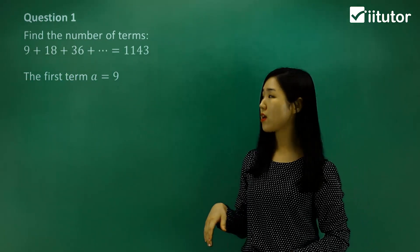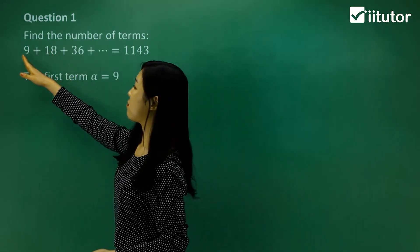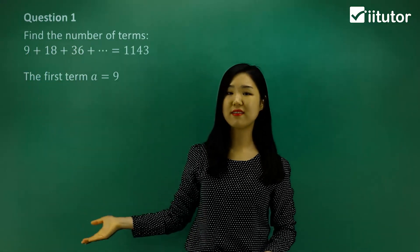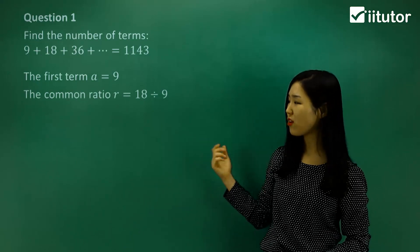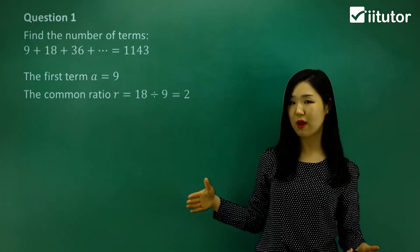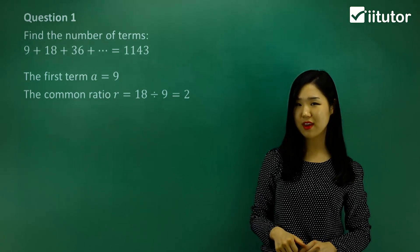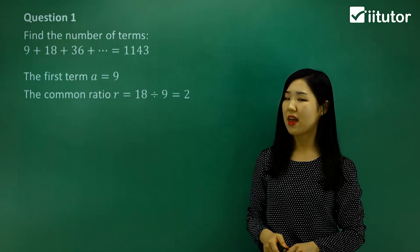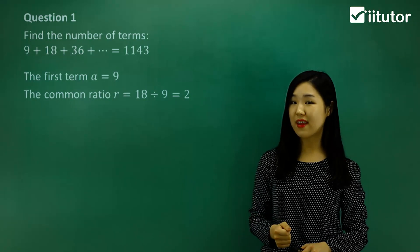Now the common ratio, we can do that by doing 18 divided by 9 or 36 divided by 18, both will give you the same answer. I'll just do 18 divided by 9, and that will give us 2. So we multiply 2 each time to get every consecutive number. And we don't know what n is, that's unknown, that's what we want to find.